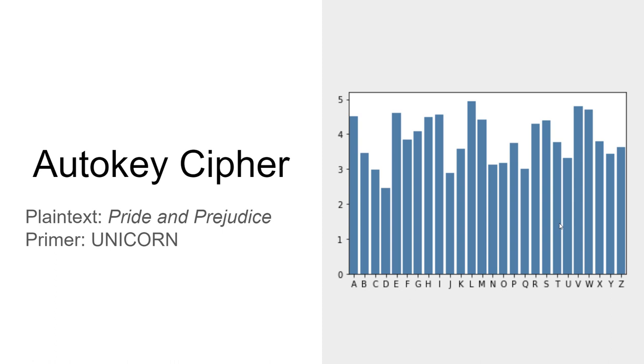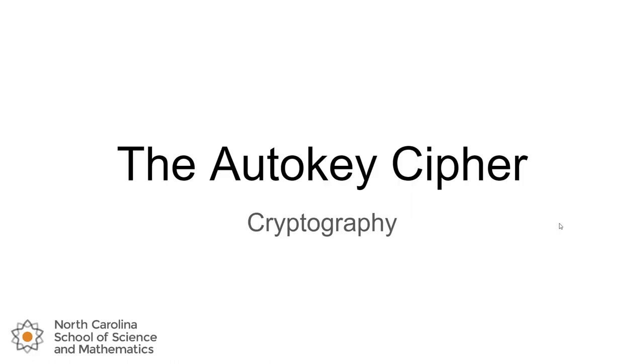We're going to see it's really difficult to do that with perfect security, but this autokey cipher is going to get us as close as we can with these classical methods to a really good security method until we introduce modern cryptography with computers. So that's the autokey cipher. Thanks for watching. We'll catch you in the next one.